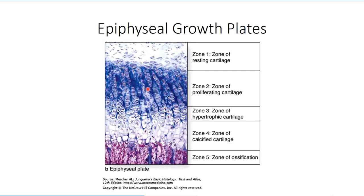Zone 2 is the proliferative zone and is by far the most important in the growth process. The area is dominated by chondroblasts that continue to divide, existing in stacks aligned with the long axis of the bone. As they divide, they add to the length of the stack, which pushes into the resting zone and thus adds to the length of the bone. Next is the hypertrophic zone, which consists of chondroblasts originally part of the proliferative zone. Matrix components trigger them to expand, compressing the surrounding matrix.